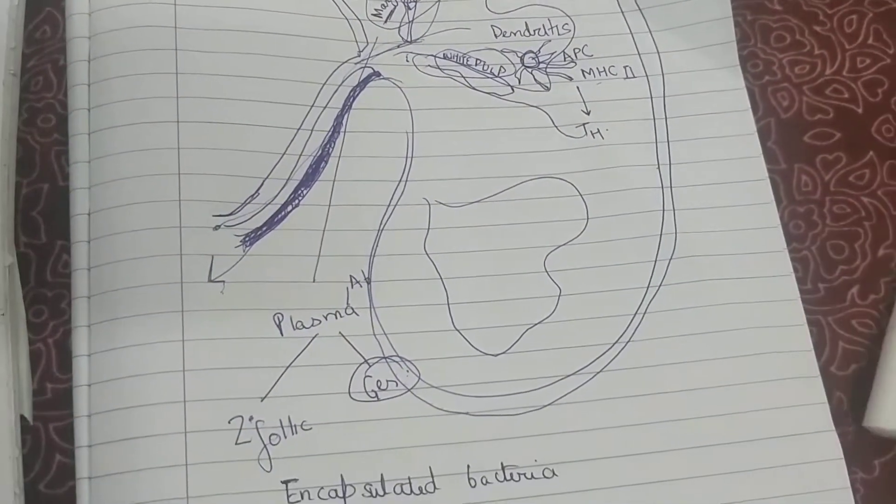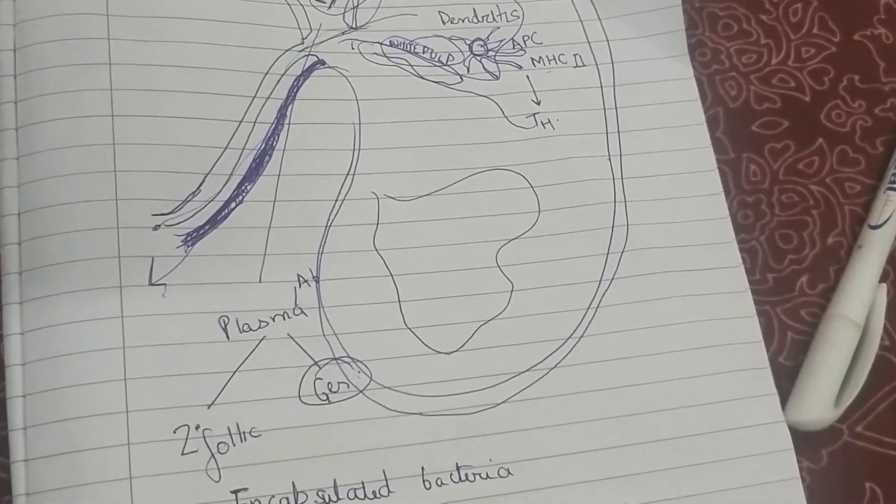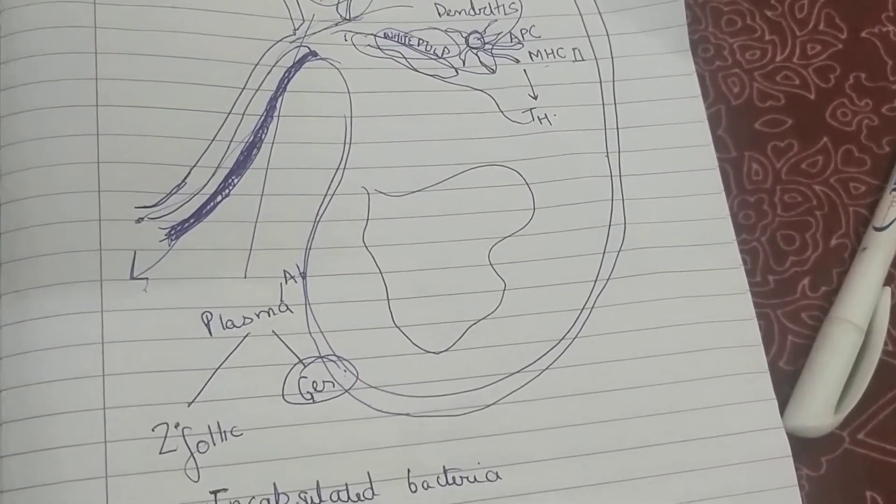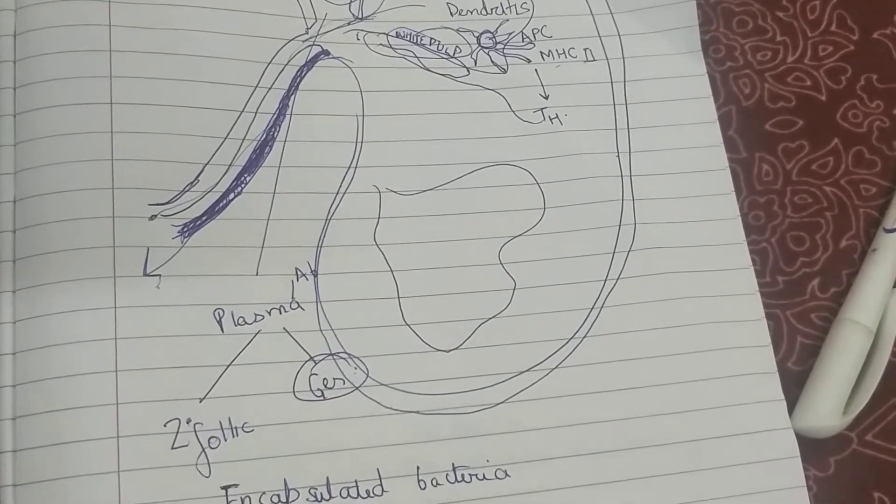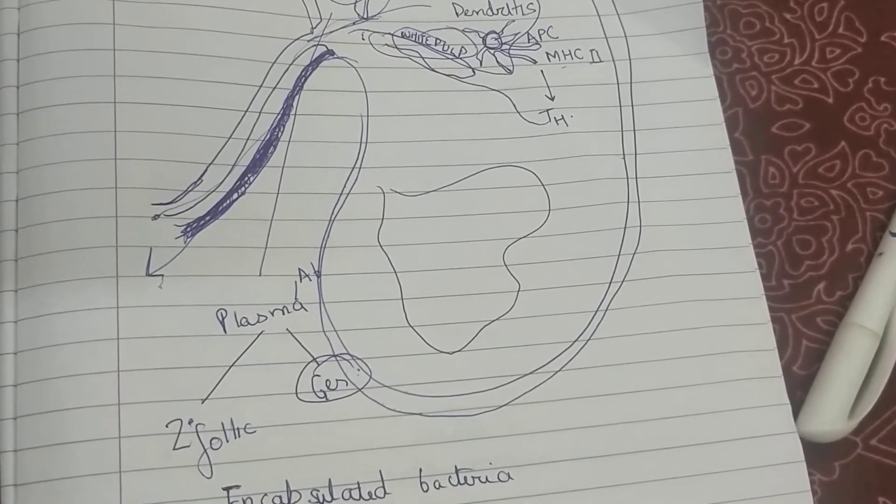These antibodies from B cells lead to phagocytosis of the pathogenic organism by opsonization.